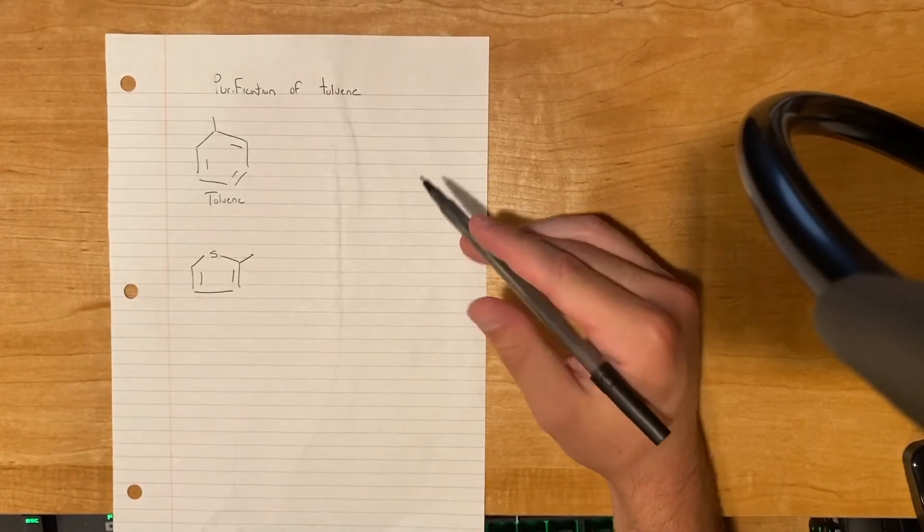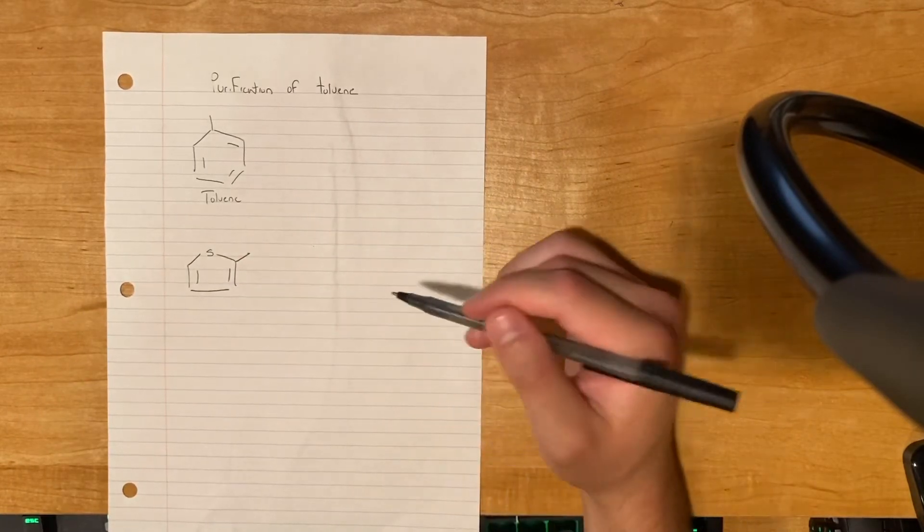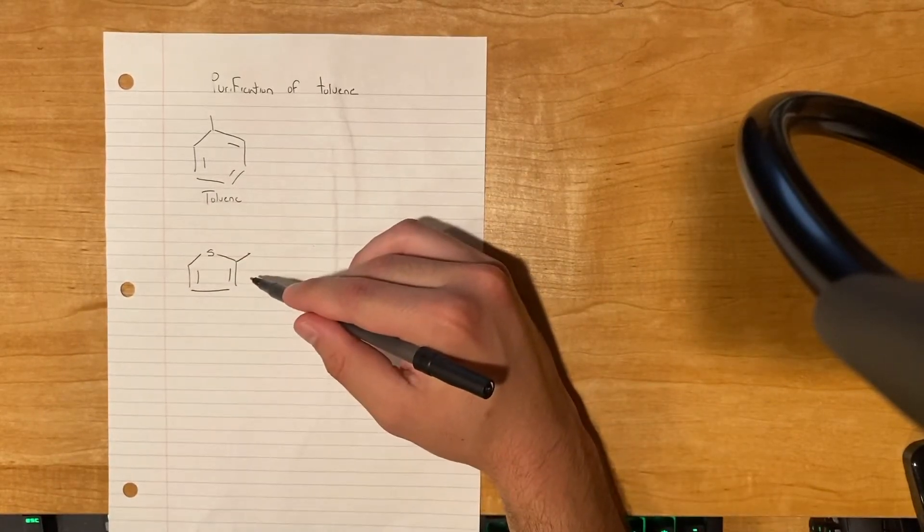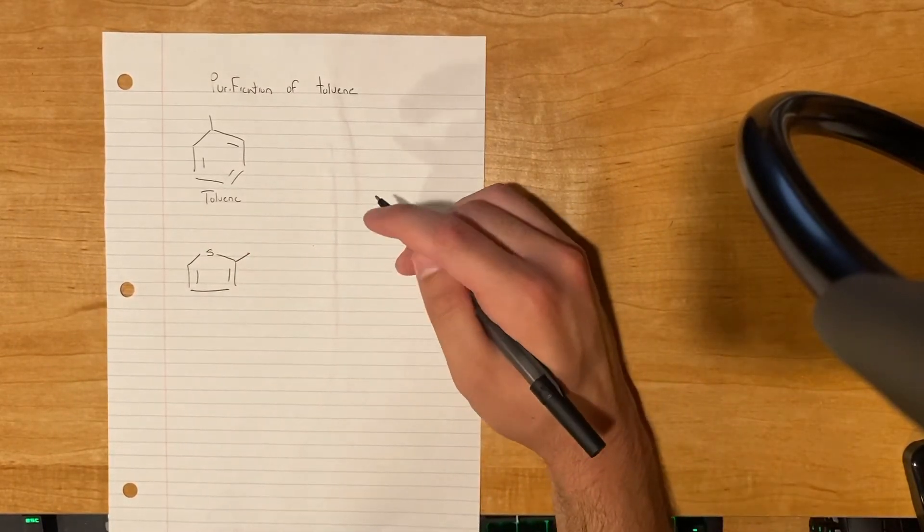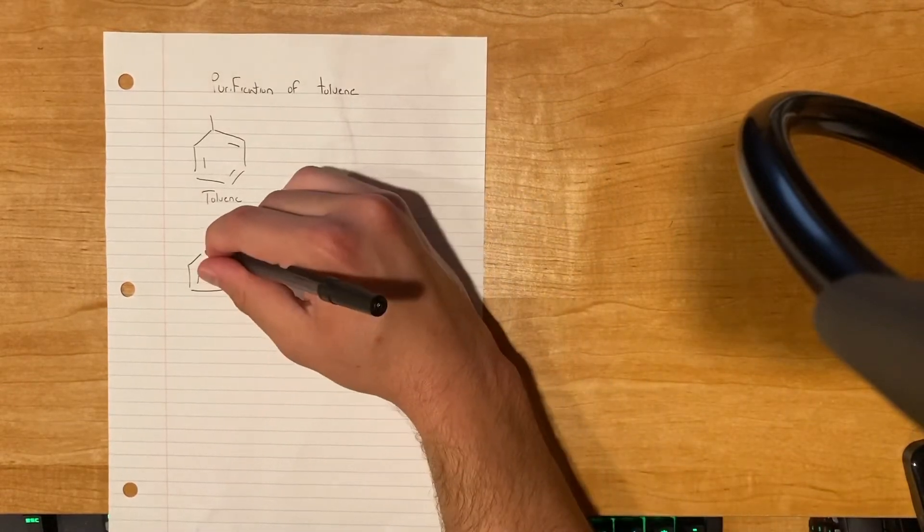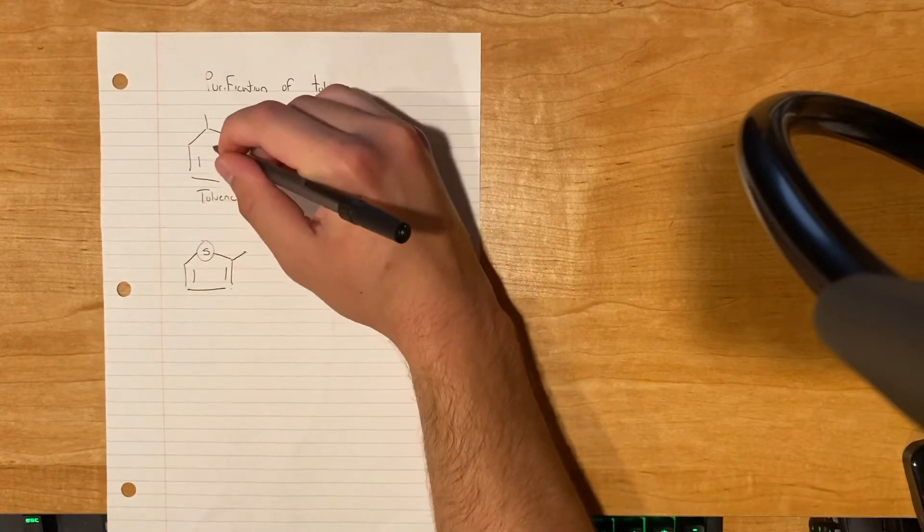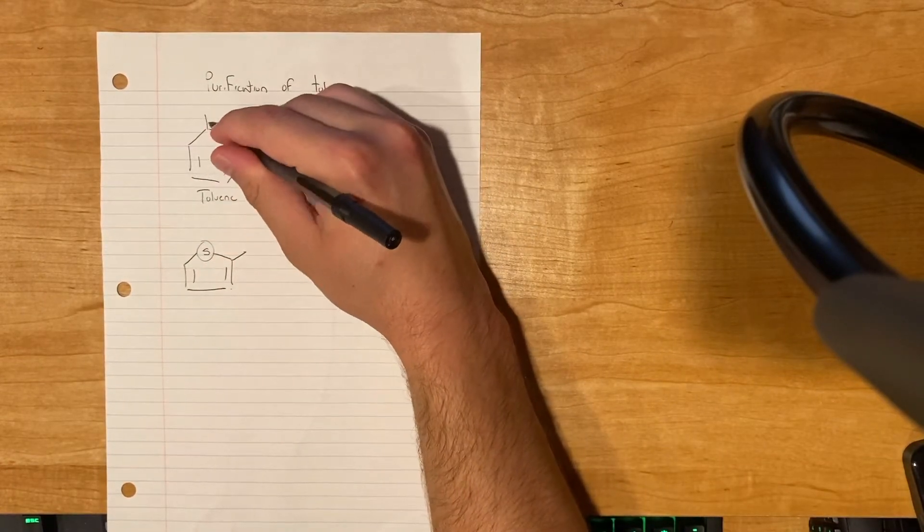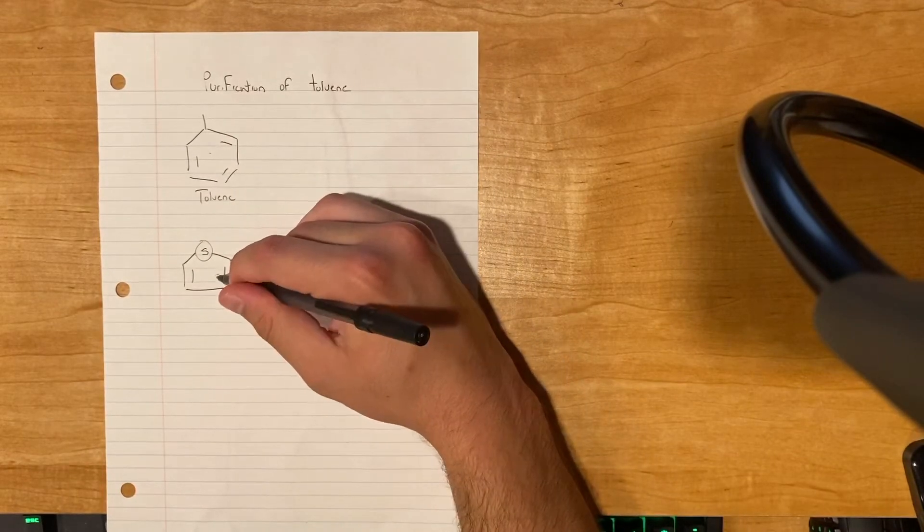So we hope to remove methylthiophene. Now, you can't do it by distillation because of the similarity in these two's boiling points, so you have to do it by sulfonation. And since this sulfur compound activates this ring and there is no highly activating group on this toluene, methylthiophene will be sulfonated first.